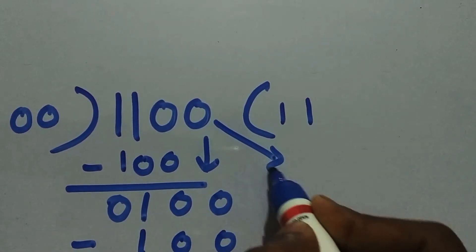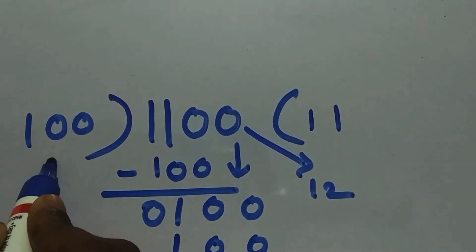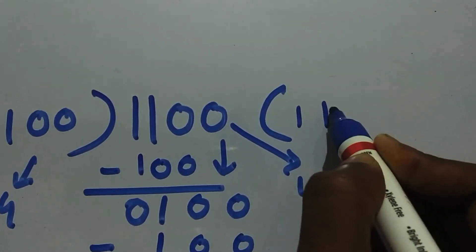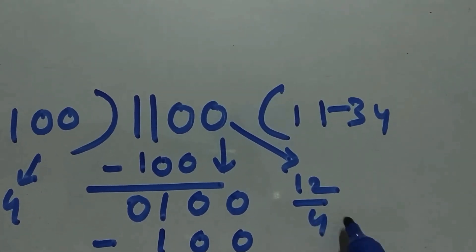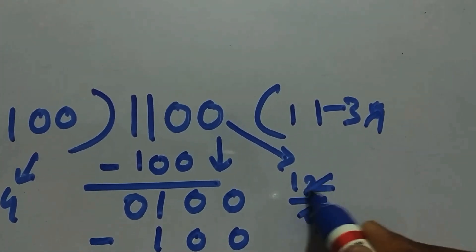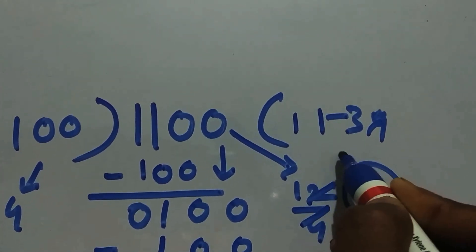As you can see, this is 2 in binary, this is 4 in binary, and this is 3 in binary. So 12 divided by 4 is 3. There you go, our answer is 3.